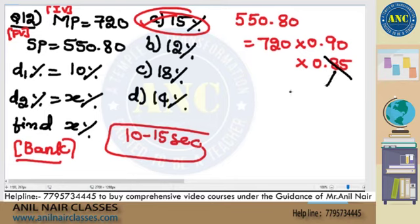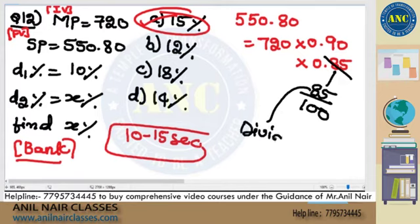0.85 is nothing but 85 by 100. 85 is divisible by 17. Easy question. Answer should also be divisible by 17.